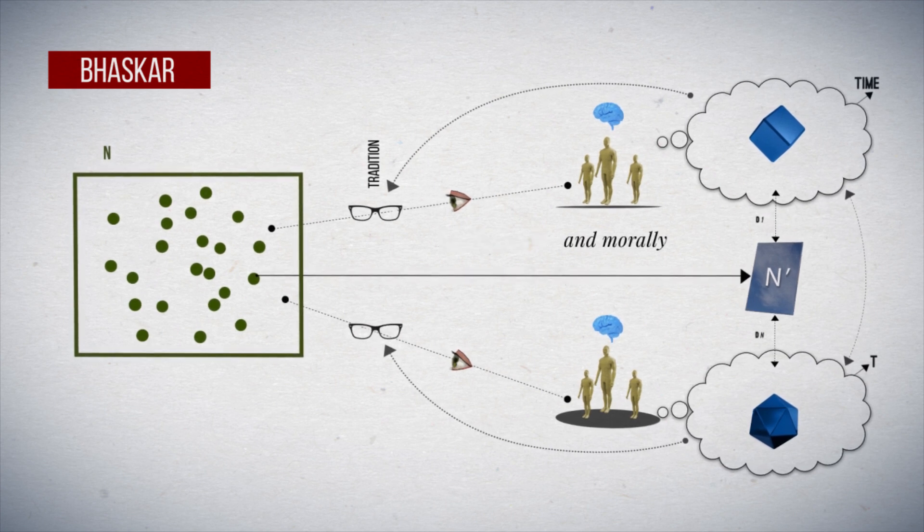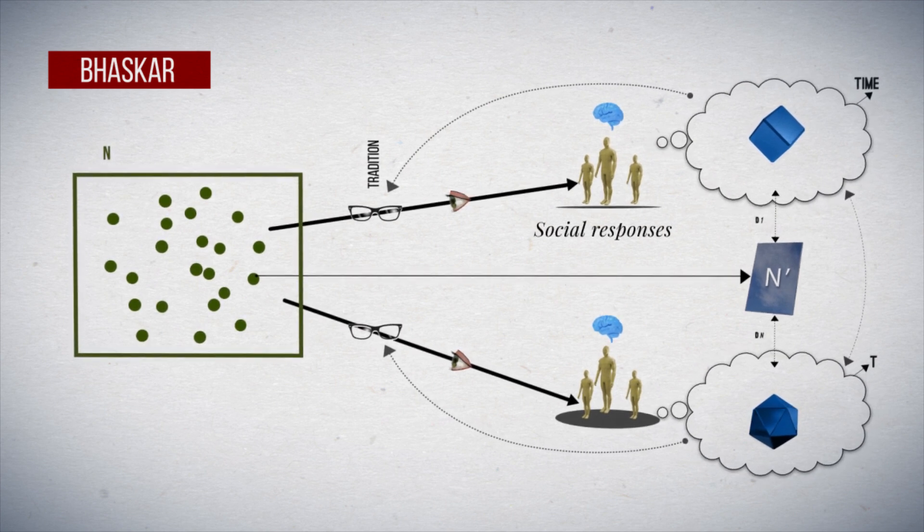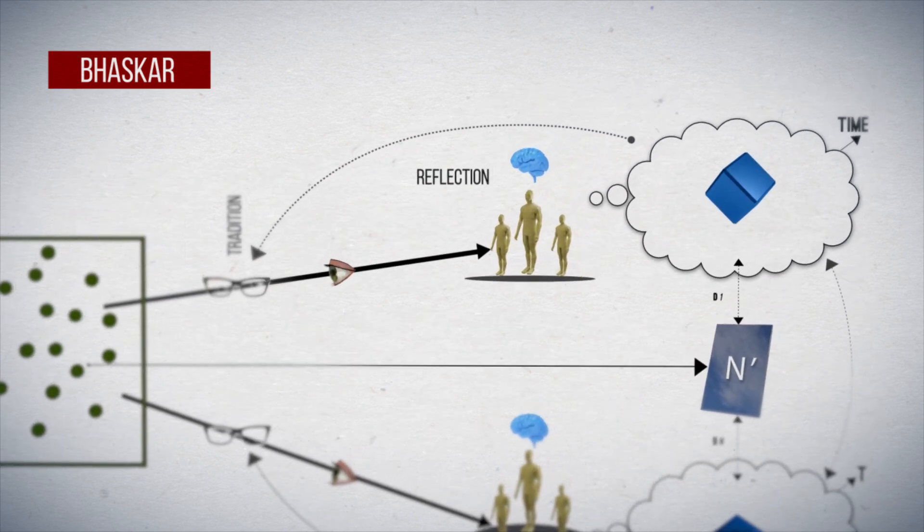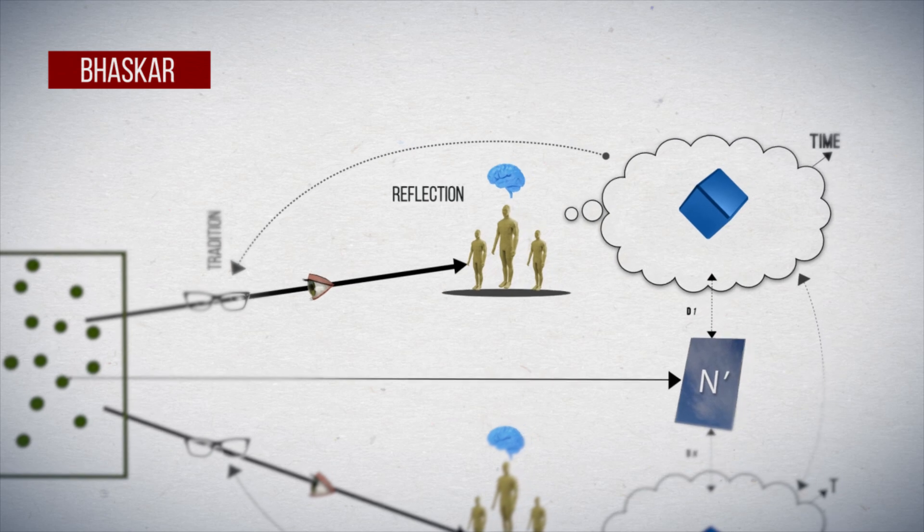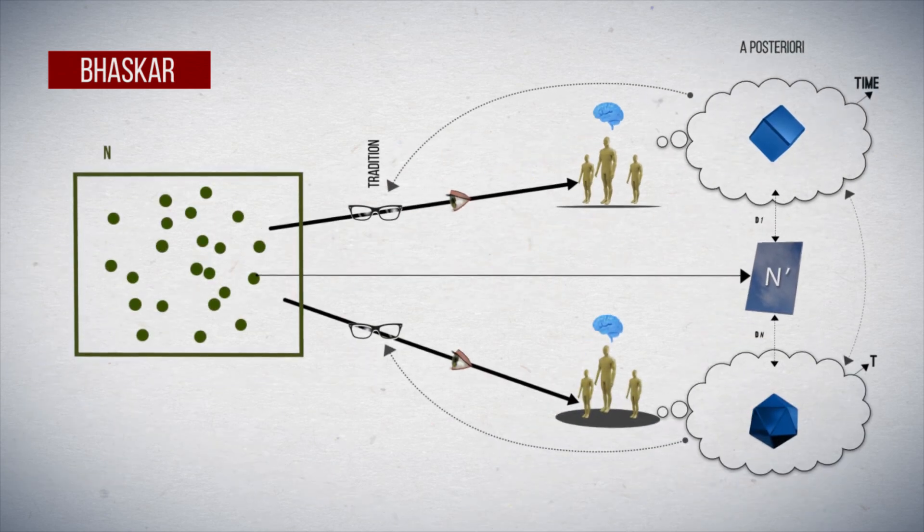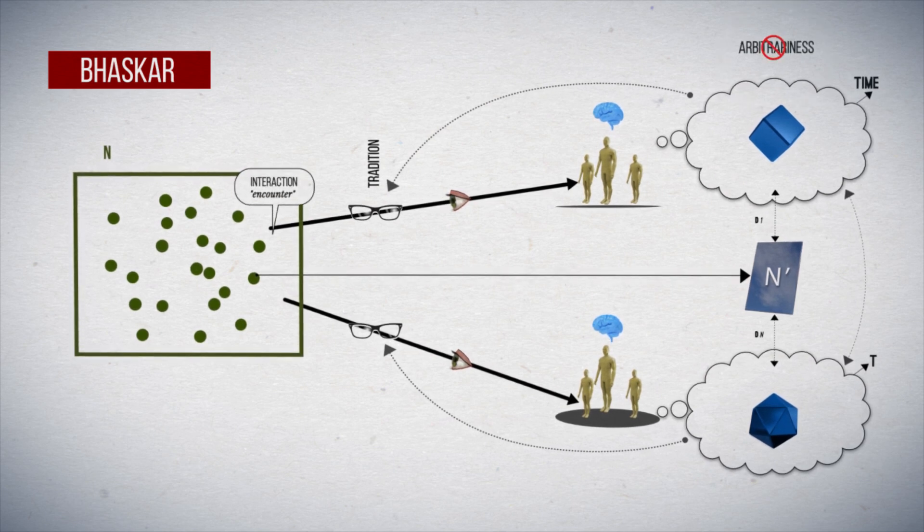So, for Baskar, constructs are social responses inductively produced by reflection on the interaction with an external reality, and in this way constructed after this empirical encounter. Thus, constructs are not arbitrary, since they have as their reference the interaction with reality.